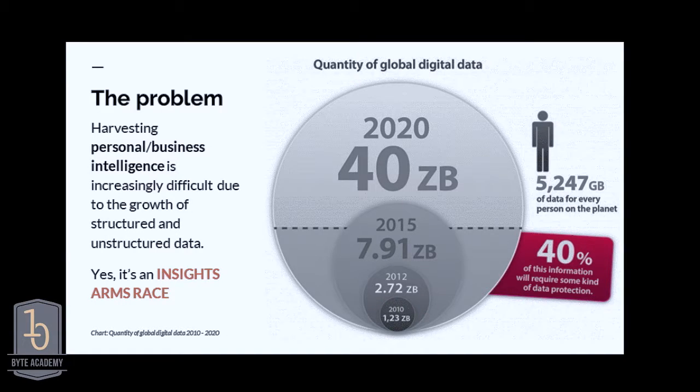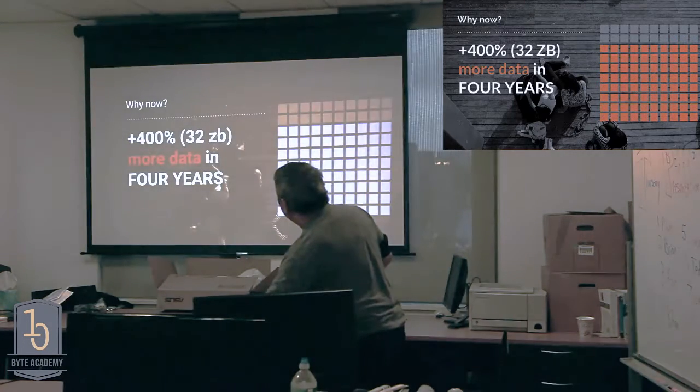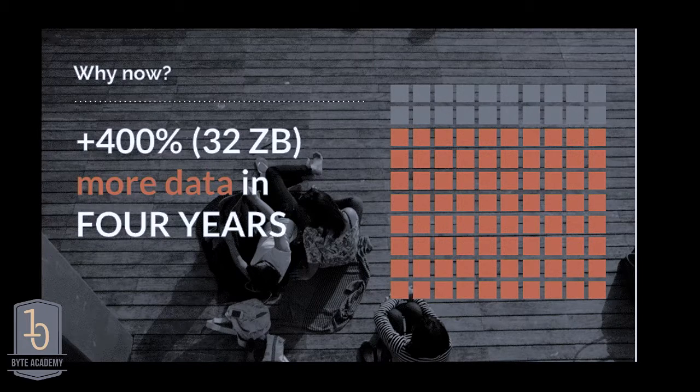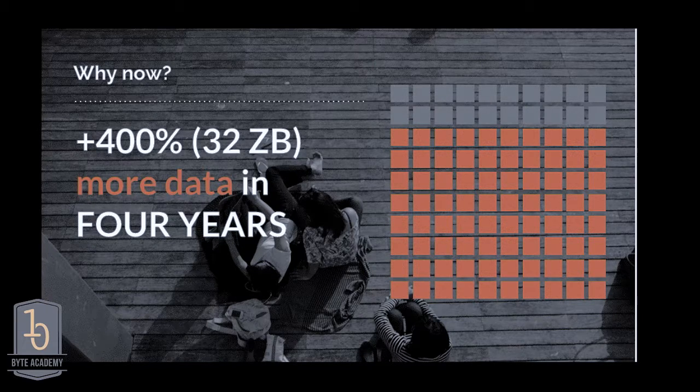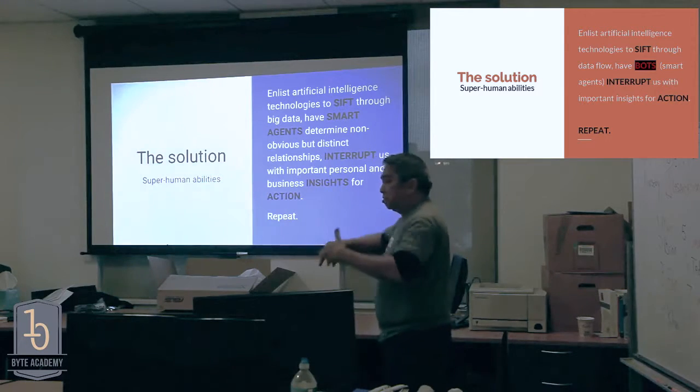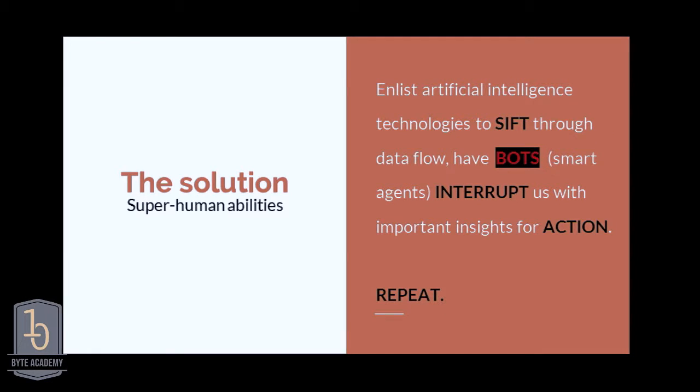The solution is to use AI technologies to sift through all this information coming in. Use smart agents to determine what's important and what's not, interrupt us when they find something important, and give us information for our action. As we repeat that process, we allow the bot to understand and learn more about what's important to us.